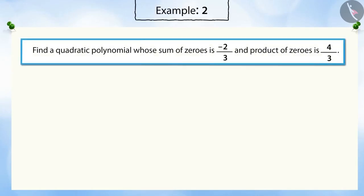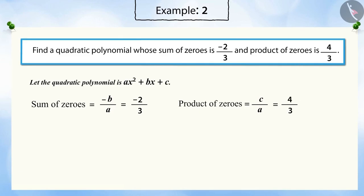Find a quadratic polynomial whose sum of zeros is minus 2 by 3 and product of zeros is 4 by 3. Here, the quadratic polynomial is ax squared plus bx plus c. We know that the sum of zeros is minus b by a and the product of the zeros is c by a.